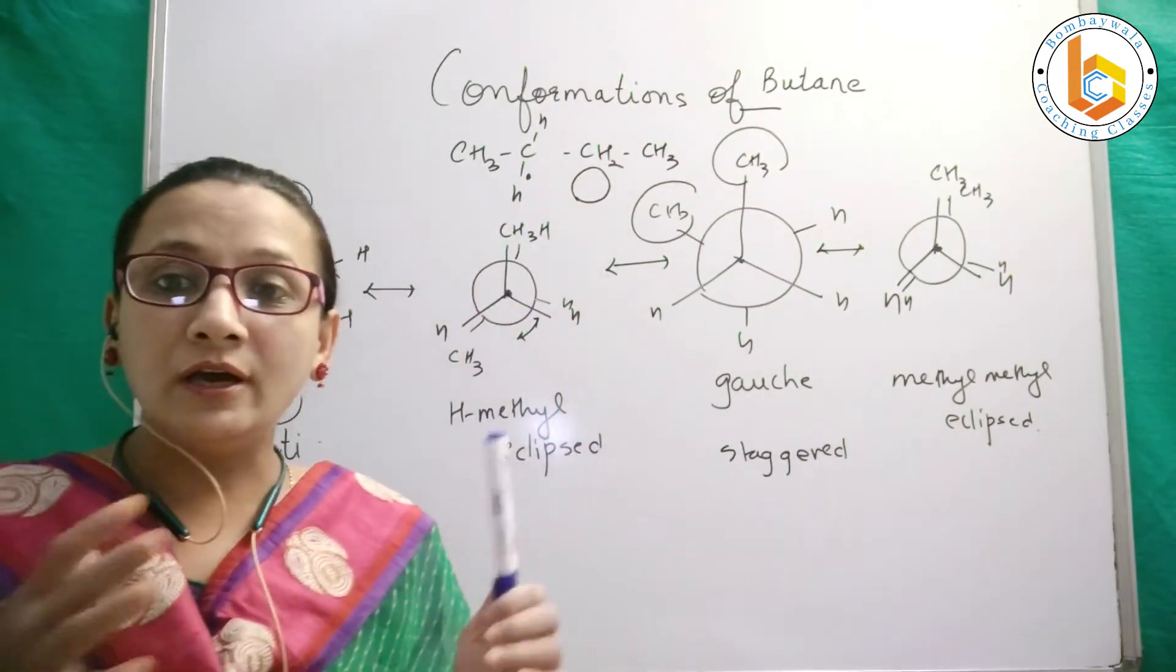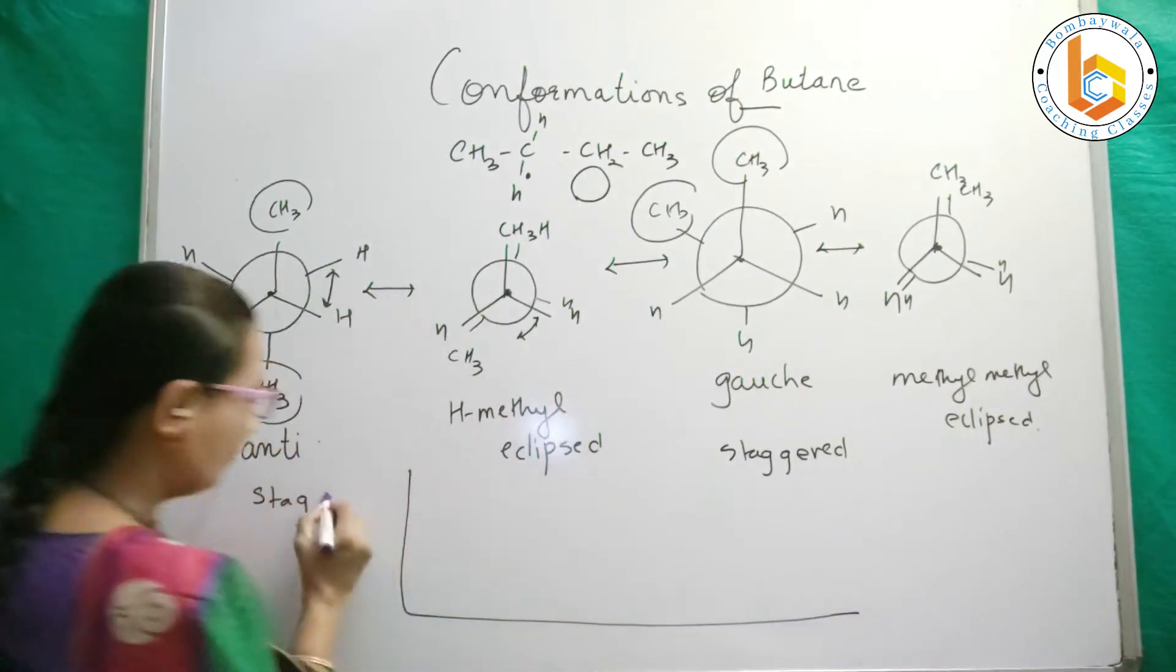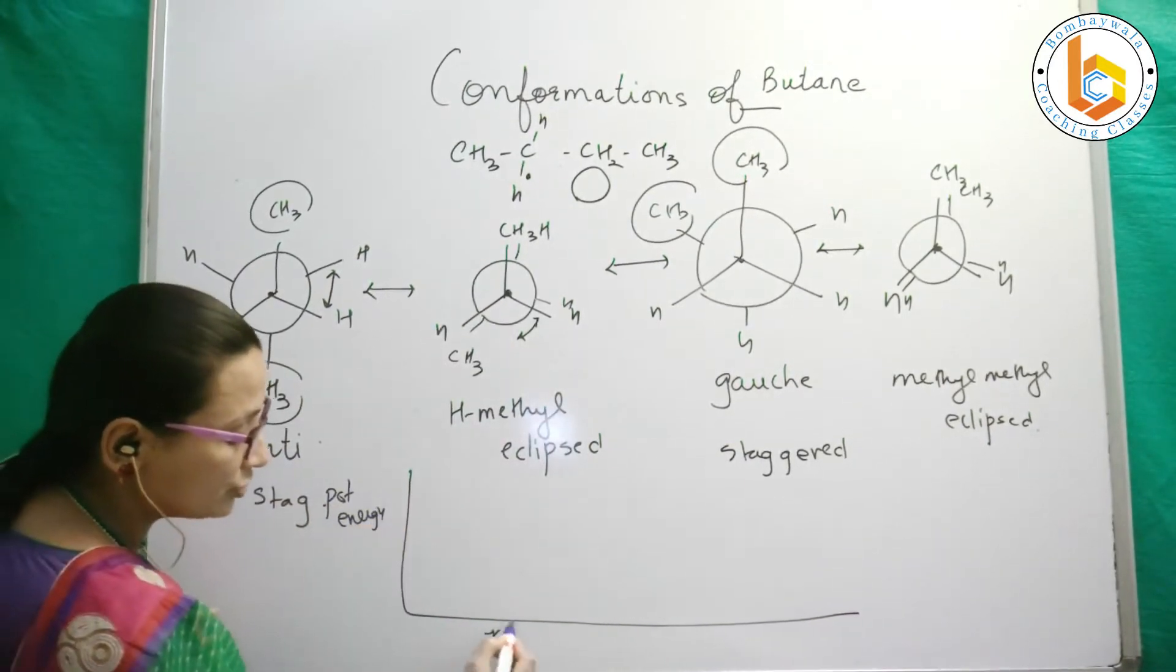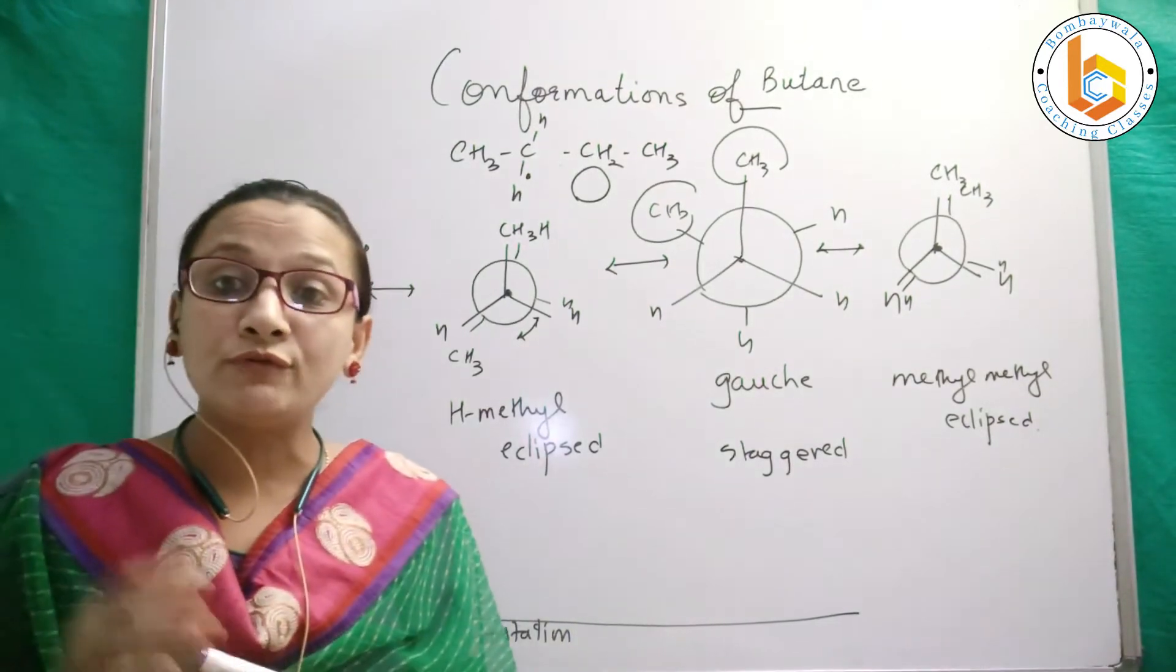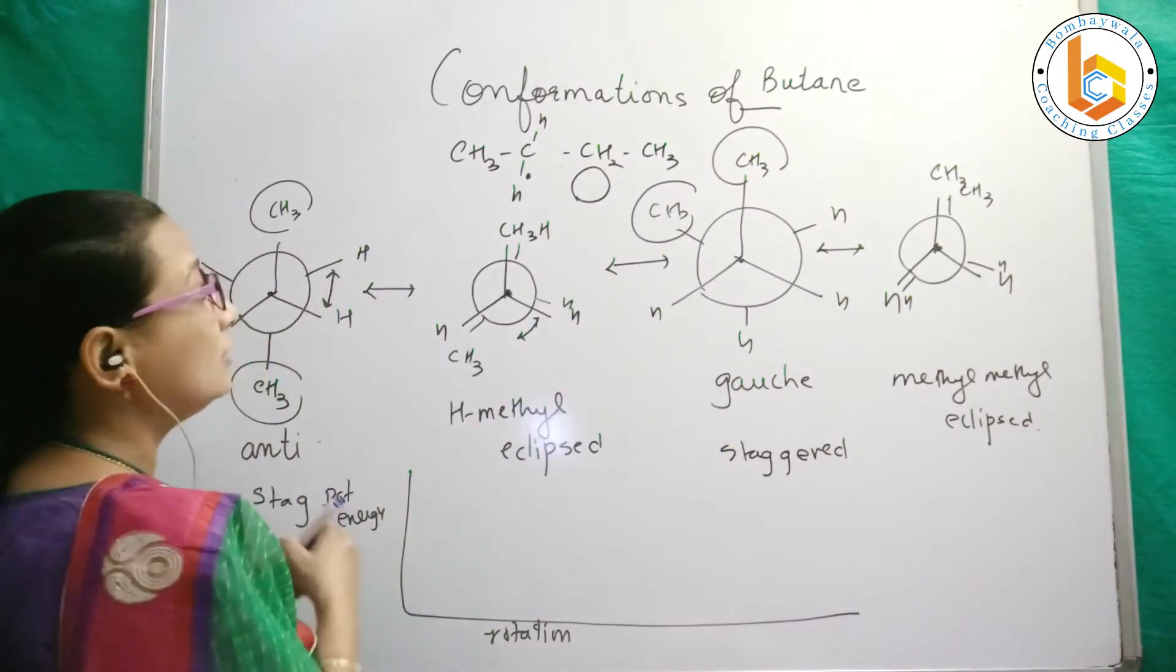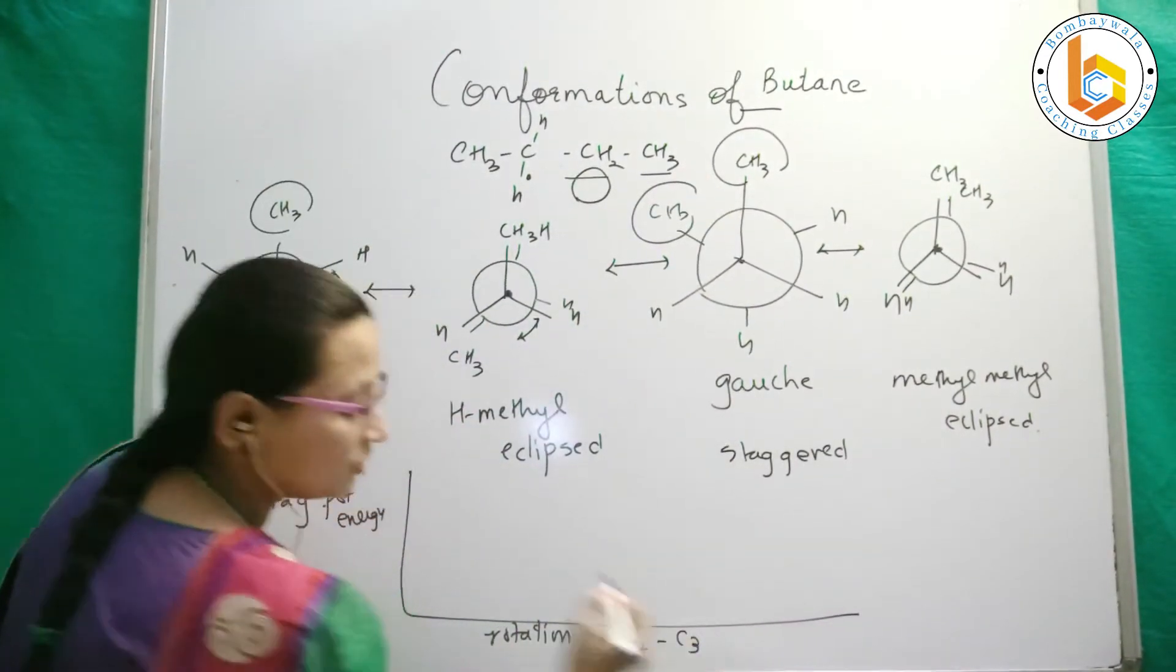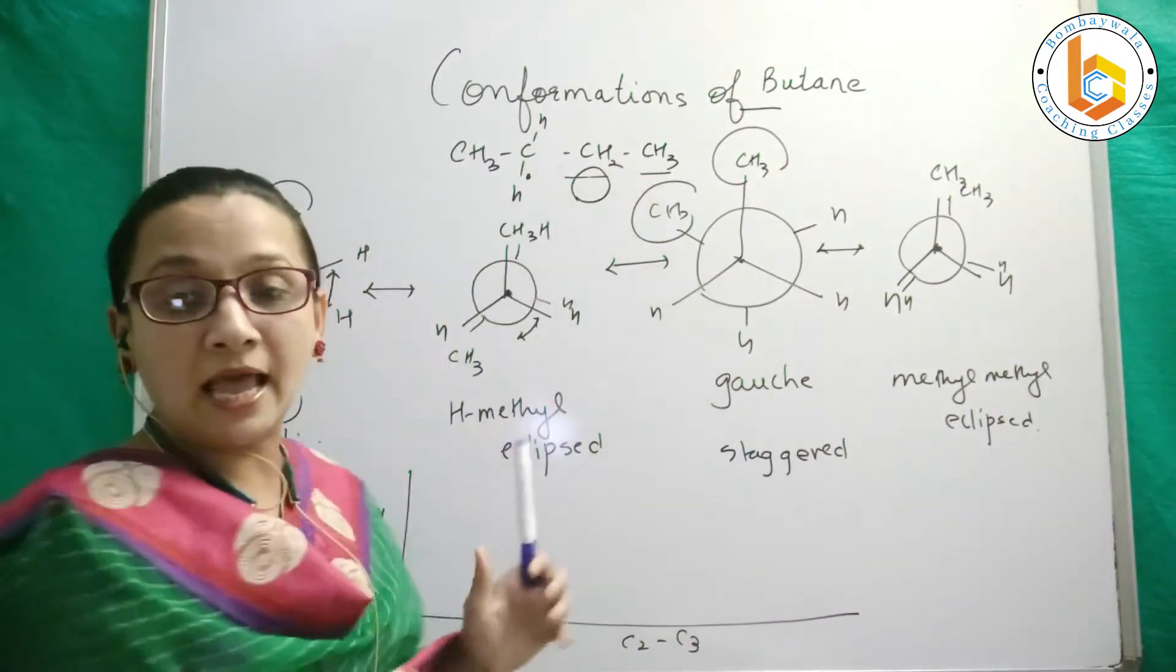So let us plot an energy profile diagram. We are going to talk about the potential energy versus the rotations of these isomers with respect to the C2 and C3 bond.